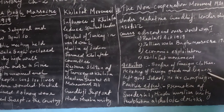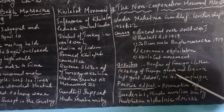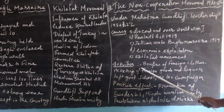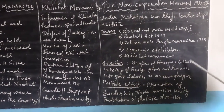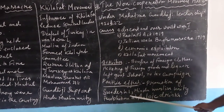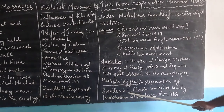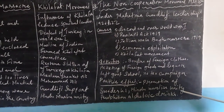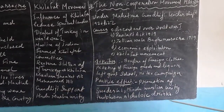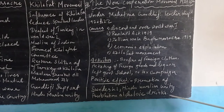Let us look at the activities of the Non-Cooperation Movement. The main activities were: bonfire of foreign goods, picketing of foreign goods and liquor shops, leaving government schools, and no-tax campaigns. As for the positive effects — promotion of Swadeshi, meaning we boycotted foreign goods and started accepting our own Indian-made goods. Hindu-Muslim unity also started, and prohibition of alcoholic drinks also began in India.